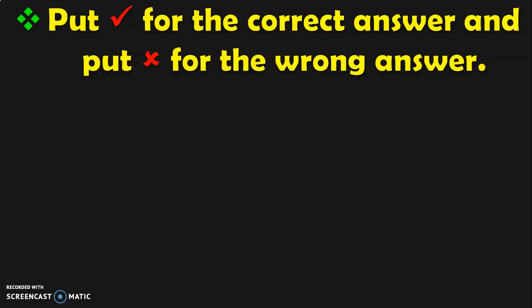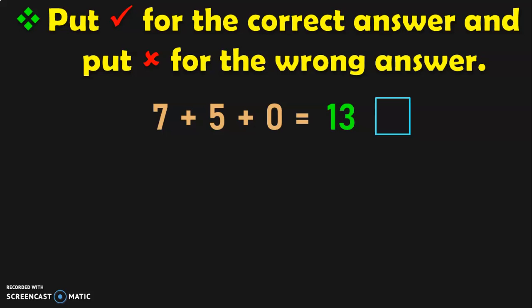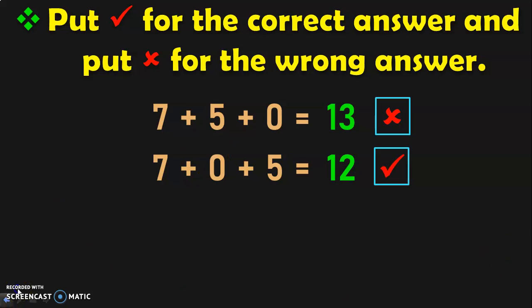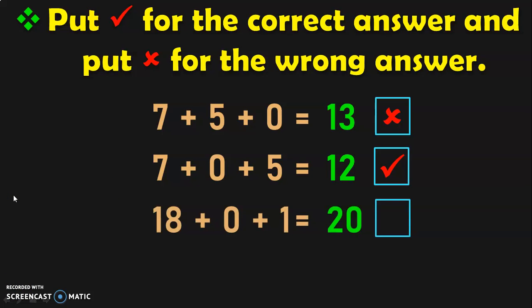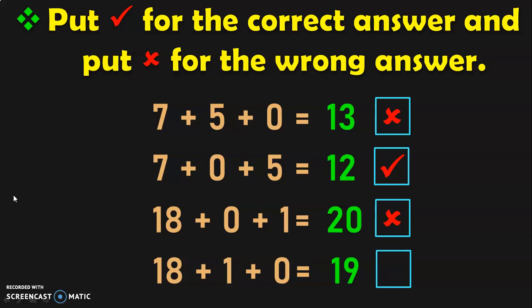Now, put a tick for the correct answer and a cross for the wrong answer. These are all properties of addition. Is 7 plus 5 plus 0 equal to 13? No, put a cross mark. Is 7 plus 0 plus 5 equal to 12? Yes — 7 plus 0 is 7, and 7 plus 5 is 12, so put a tick mark. Is 18 plus 0 plus 1 equal to 20? No. Is 18 plus 1 plus 0 equal to 19? Yes — 18 plus 1 is 19, and 19 plus 0 is still 19, so put a tick mark.